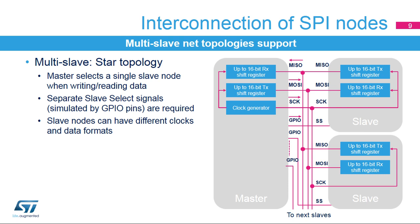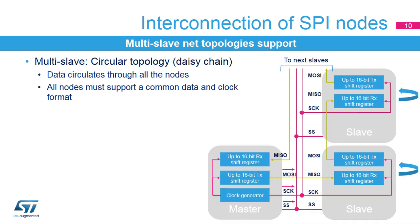Another multi-slave configuration is the circular topology, where the inputs and outputs of all the nodes are connected together in a closed serial chain. A common slave select signal is used for all the nodes as communication occurs at the same time. All nodes must have the same data and clock format configuration. Microcontroller SPI nodes typically use separate internal transmit and receive shift registers, so the data transferred between them has to be handled by software in a circular mode. A specific underrun feature can be selected during the slave configuration to automatically handle these transfers by hardware.